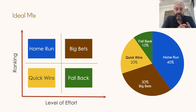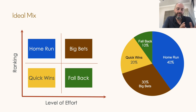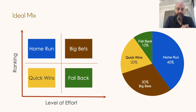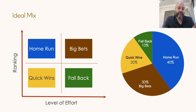This is an ideal mapping where we strive to keep a balance between quick wins — low effort, low impact — our home runs — low effort, big impact — big bets — big effort, big impact — and fallbacks — big effort, medium impact. That's a good balanced approach we always look at when reviewing our backlog.